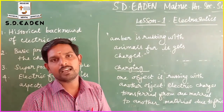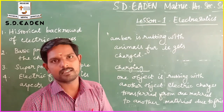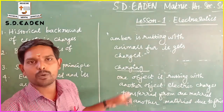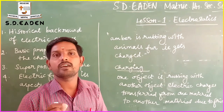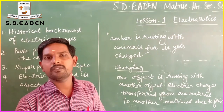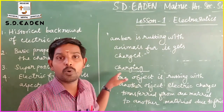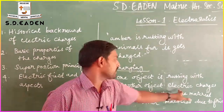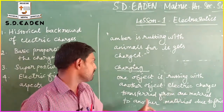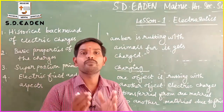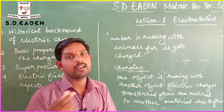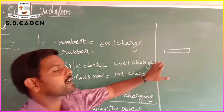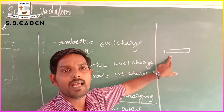Another material, a glass rod, when rubbed with a silk cloth, also gets charged. So what is meant by charging? Throughout the electrostatics lessons we use the term 'charge', so here we introduce the term 'charging'. Charging means one object is rubbed with another object, so electric charges are transferred from one material to another due to friction.